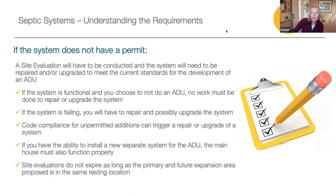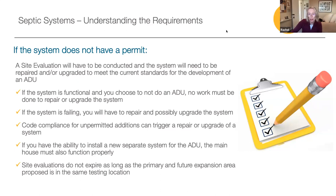If your system does not have a permit, a site evaluation must be done. The system will need to be repaired and/or upgraded to meet the current standards for new development when building an ADU. It is important to note that if your system is functional and you choose not to build an ADU, no work must be done to repair or upgrade the system — so you're not obligated to do the work if you do not move forward with the project.